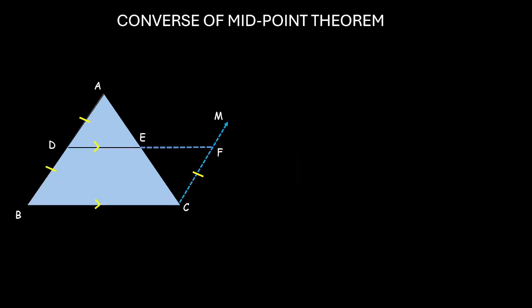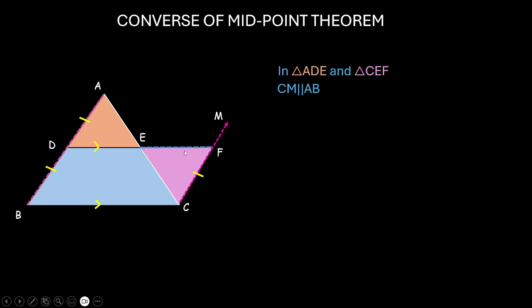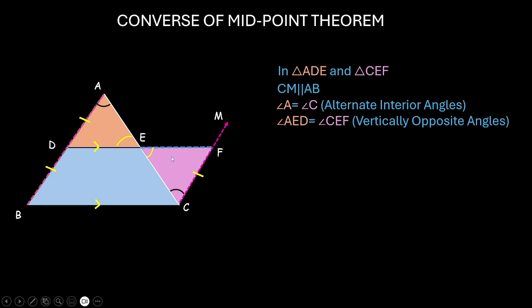Now, let us look at these two triangles carefully. Triangle ADE and triangle CFE. The orange and the pink colored triangle. In this, CM is parallel to AB, right? And, AC is the transversal. We again have a Z shape. So, this angle A is equal to angle C, because they make a pair of alternate interior angles. Also, this angle DEA in the orange triangle is equal to CEF in the pink triangle, because these are vertically opposite angles.